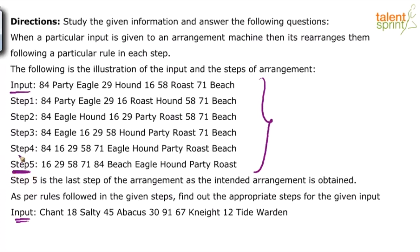Looking at step five: 16, 29, 58, 71, 84, beach, eagle, hound, party, roast. Clearly, all the numbers have been arranged first, then all the words. Within numbers, ascending order has been followed — 16, 29, 58, 71, 84. Within words, alphabetical order has been followed — B, E, H, P, R. So the logic is: bring all numbers to the front in ascending order, and words at the end in alphabetical order.